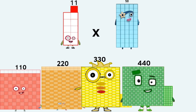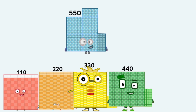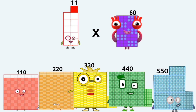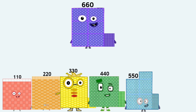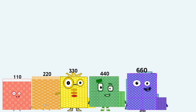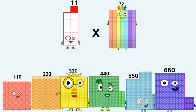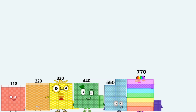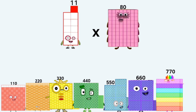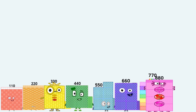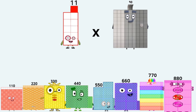11 times 60 equals 660. 11 times 70 equals 770. 11 times 80 equals 880. 11 times 90 equals 990.